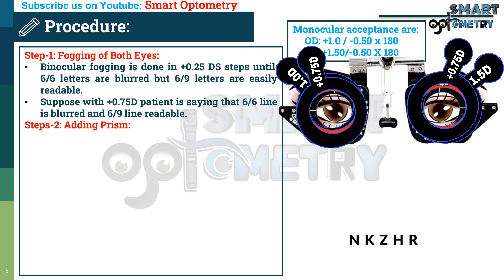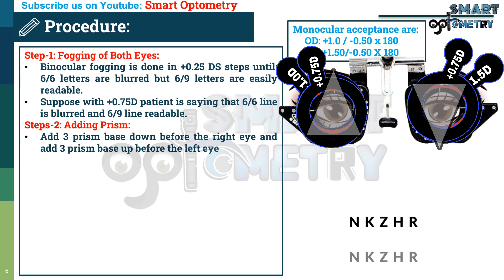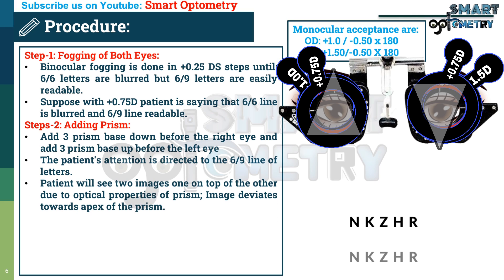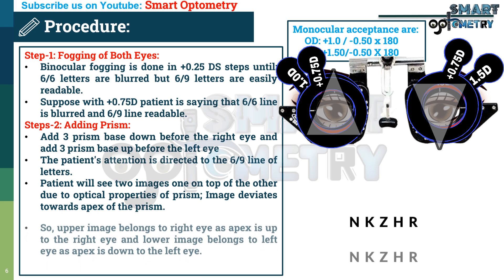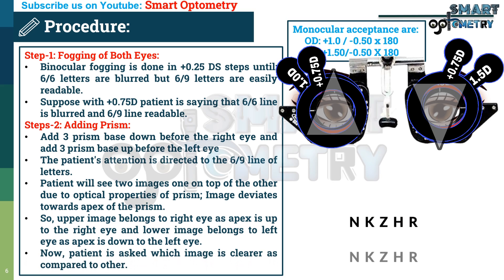Step 2: Adding prism. Add a 3 diopter prism base-down before the right eye and a 3 diopter prism base-up before the left eye. The patient's attention is directed to the 6/9 line of letters. The patient will see two images — one on top of the other — due to the optical properties of the prism. The upper image belongs to the right eye, as the apex is up, and the lower image belongs to the left eye, as the apex is down. The patient is then asked which image is clearer.